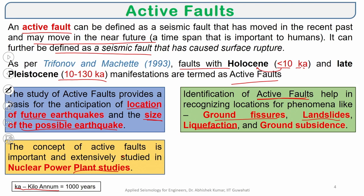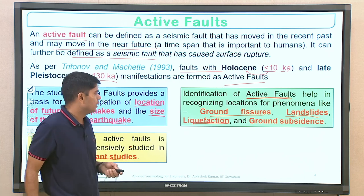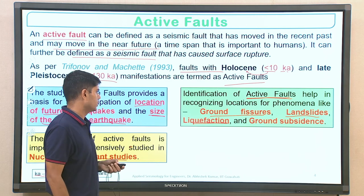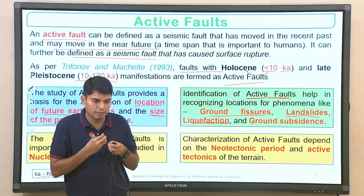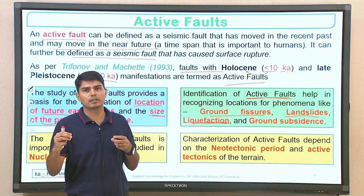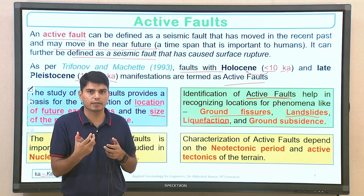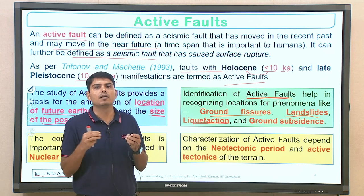Similarly with respect to ground subsidence — lot of ground subsidence can happen when the ground is very soft, and because of overcoming load or even in addition to superstructure load, the ground can show subsidence or settlement. One has to be more careful about these features getting repeated in case there is an active fault identified in the nearby region. Characterization of active faults mostly depends upon the neotectonic period — what are the compressional stresses, extensional stresses, or tensile stresses, when these stresses came into existence for the first time on this particular fault which triggered some kind of movement, and because of this movement which continued for a certain period, that triggered earthquake occurrence.